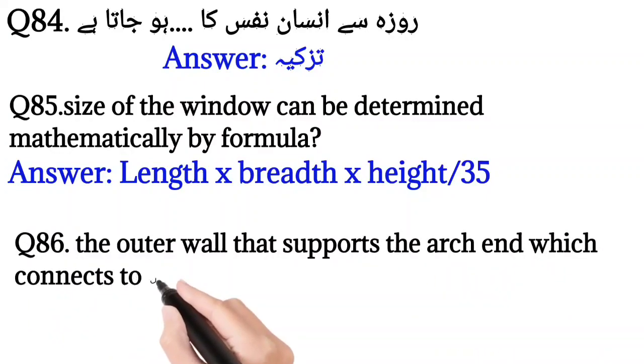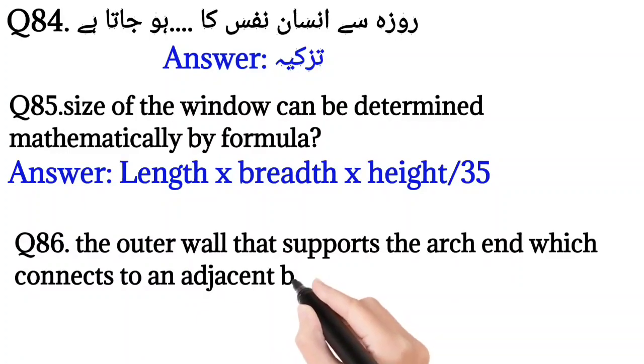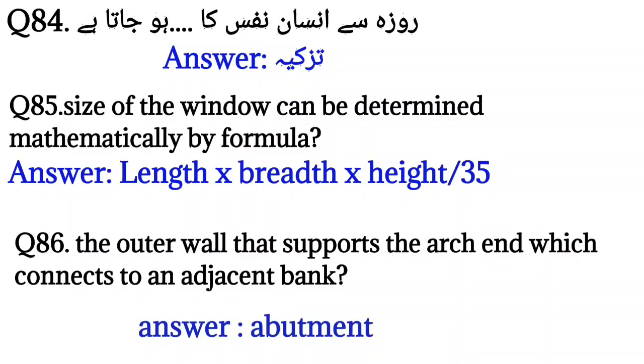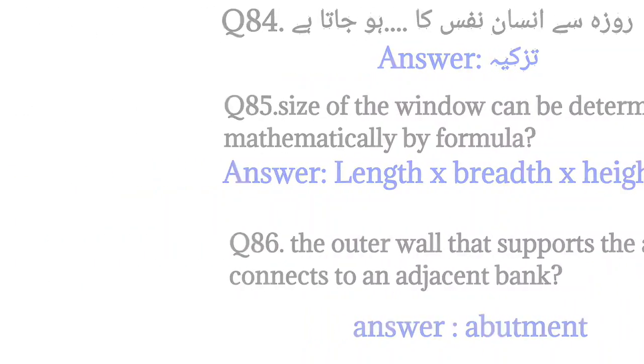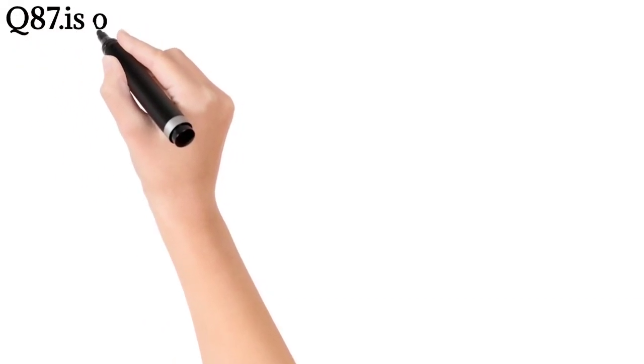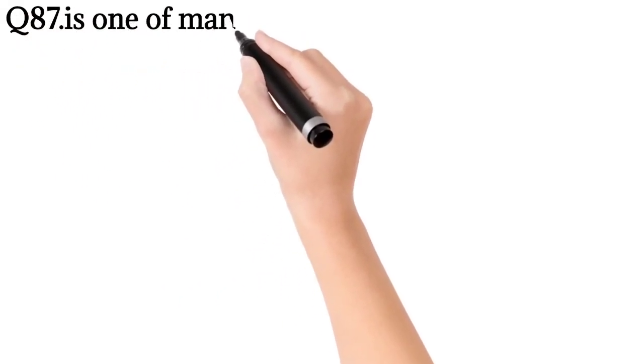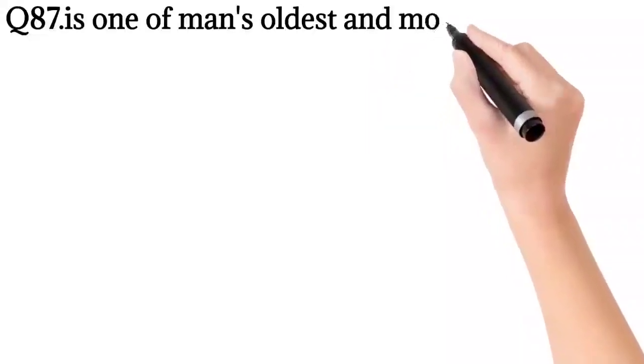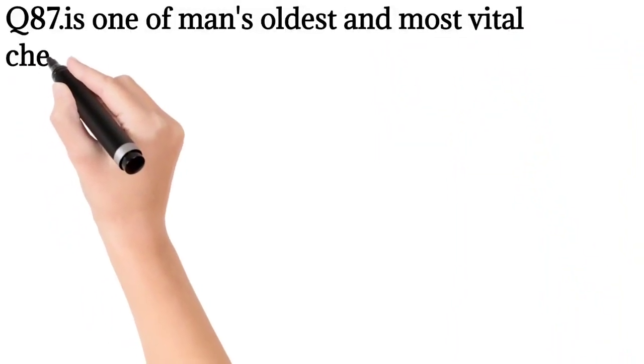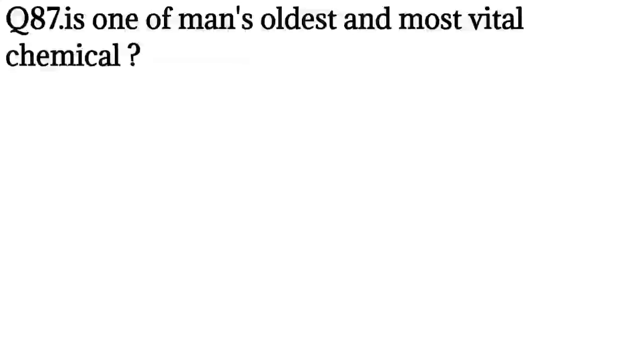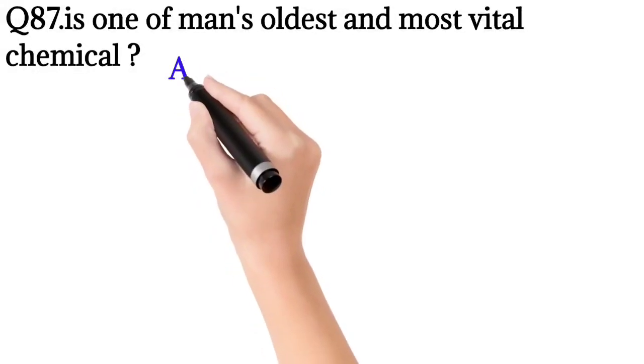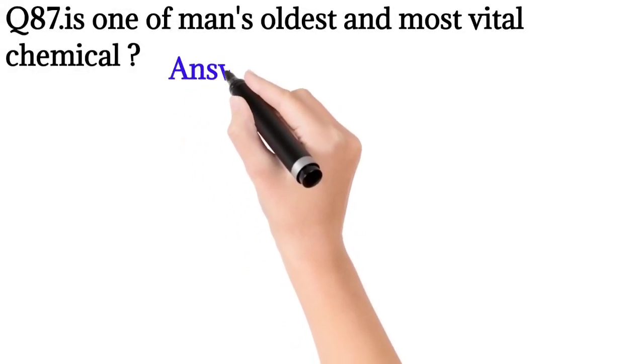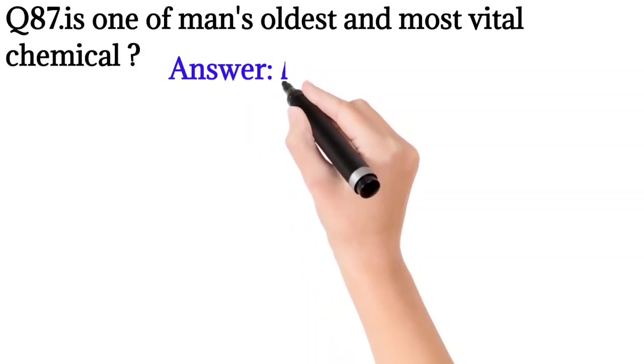Question number 86: The outer wall that supports the arch and which connects to an adjacent bank. Answer: abutment. Question number 87: One of man's oldest and most vital chemicals? Answer: lime.